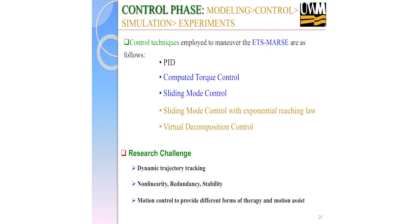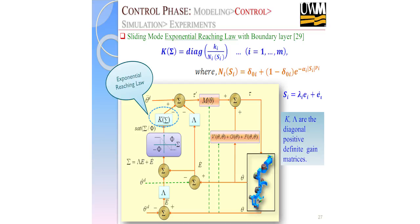Virtual decomposition control is good because we don't need to manually change mass and inertial properties every time — it has an updating mechanism that automatically updates mass and inertial properties based on error. If we run the robot twice and the error is big, it will automatically update the mass and inertial properties. The main research challenge across all these control techniques is dynamic trajectory tracking.